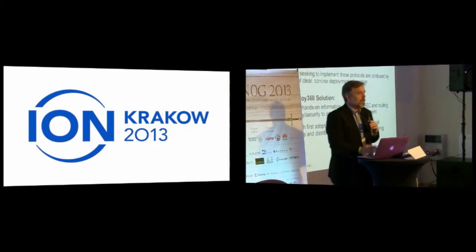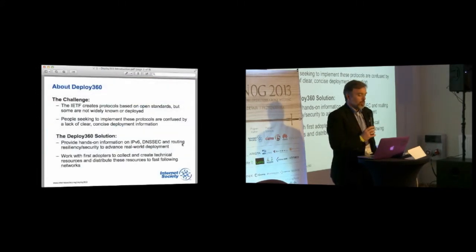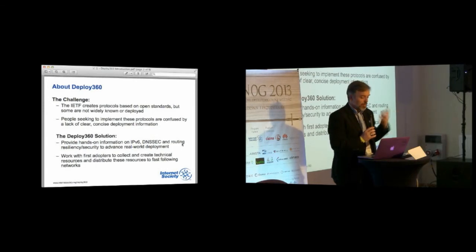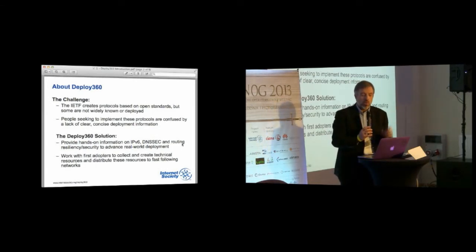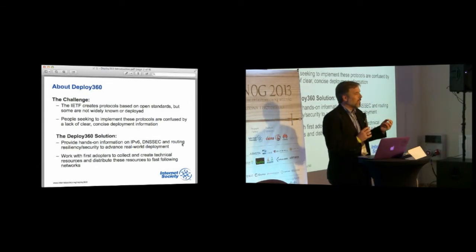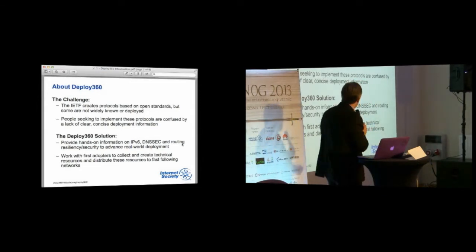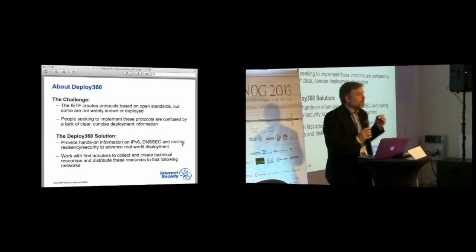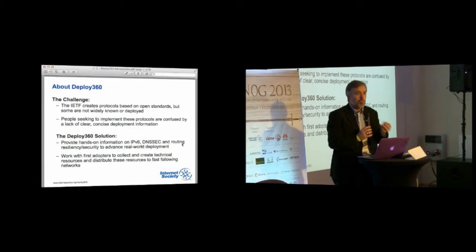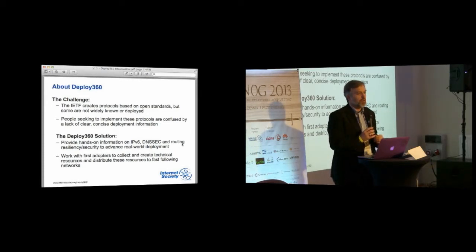Deploy360 was a program created about two years ago by the Internet Society to answer a basic fundamental challenge: the Internet Engineering Task Force was creating all sorts of open standards and protocols, but they weren't being rapidly deployed. The protocols were out there but they just weren't being used or implemented, and we wanted to find out why. In many cases there just wasn't a clear solution or clear steps on how to get those out there, and in some cases the business case was unclear. Our solution, as you can see on the slide here, is to provide material to help people understand and take away the pain of getting those protocols deployed. Our initial focus was on IPv6 and DNSSEC, and we've added material around routing, resiliency, and security.